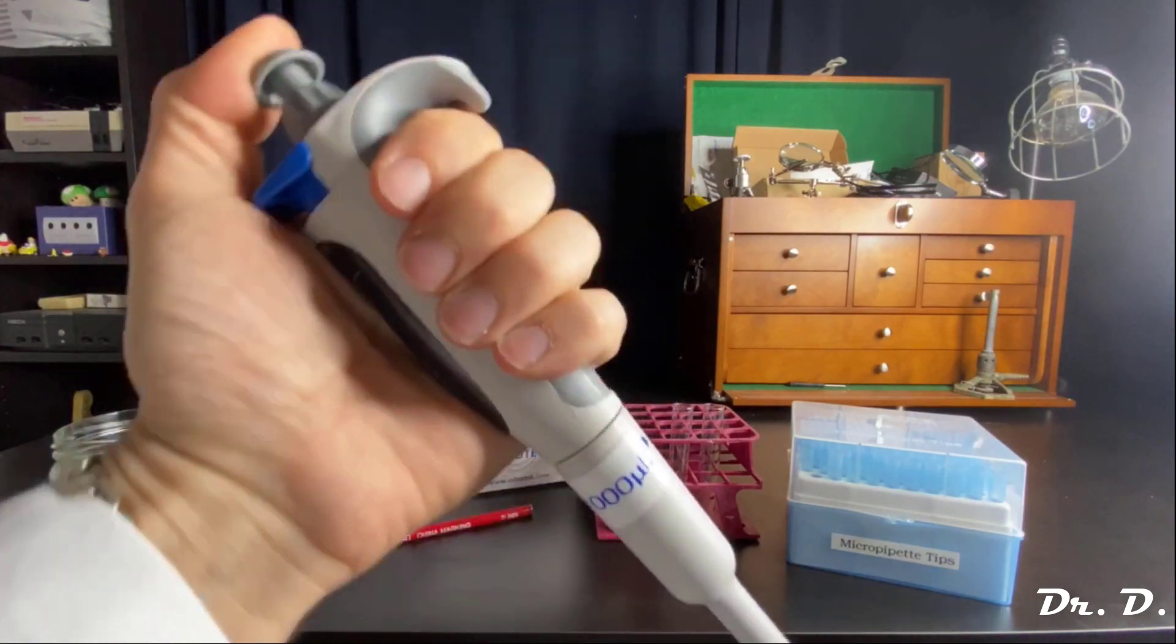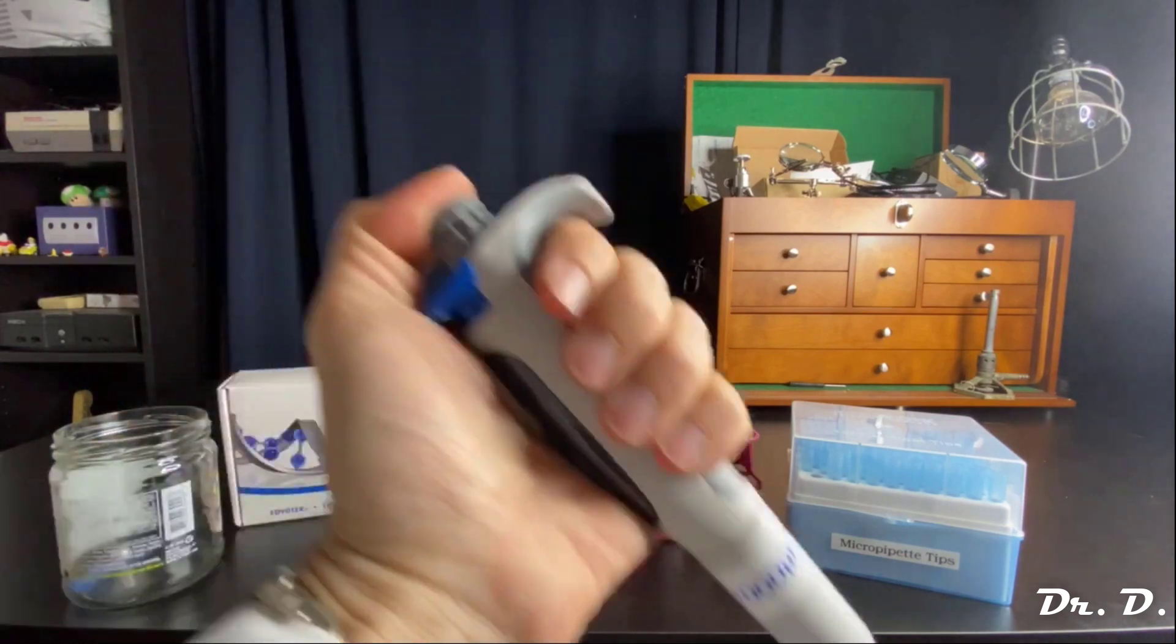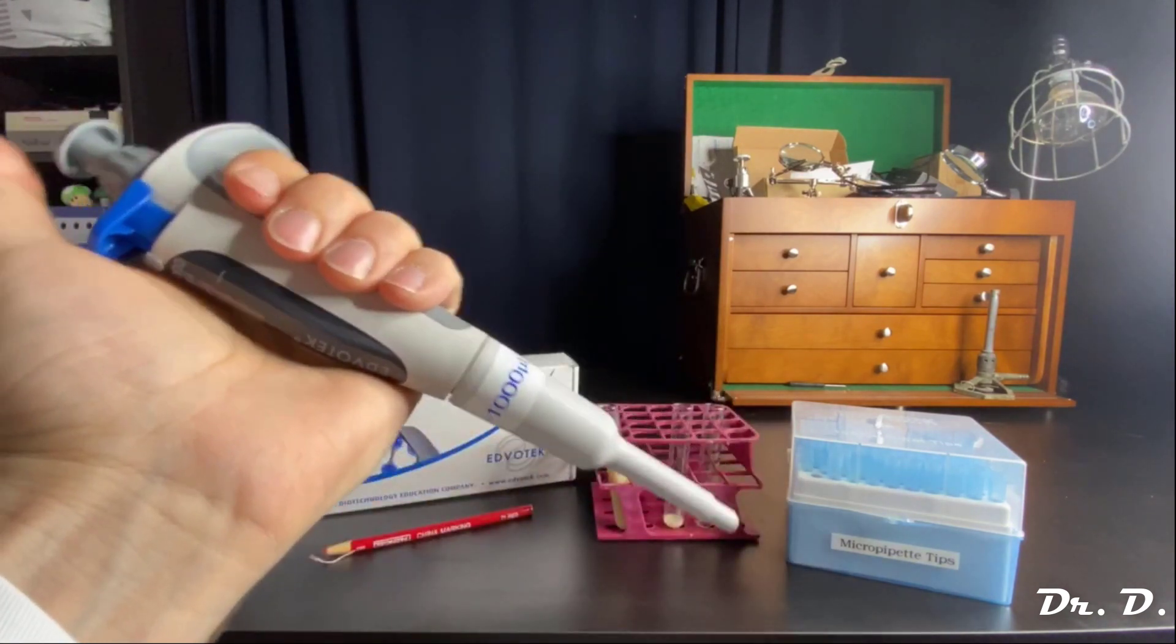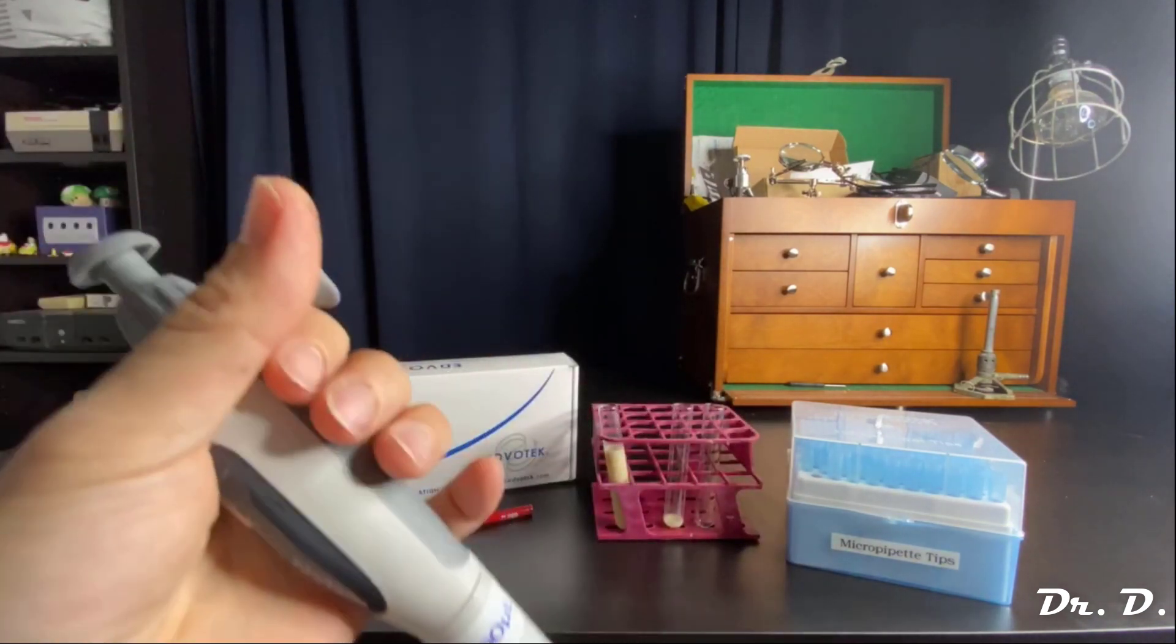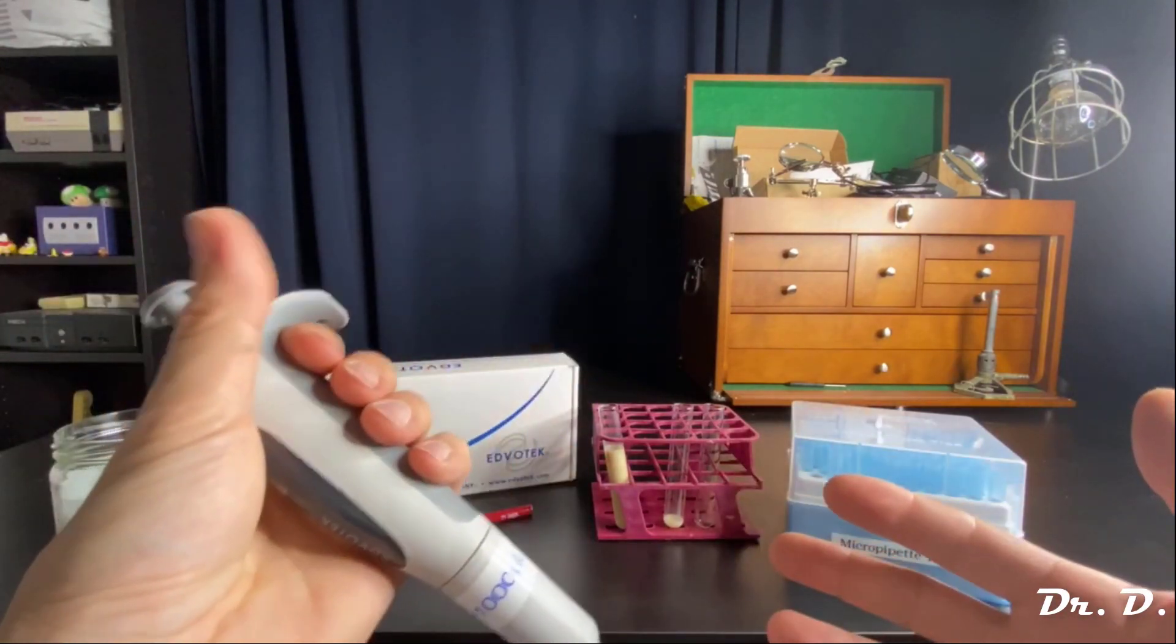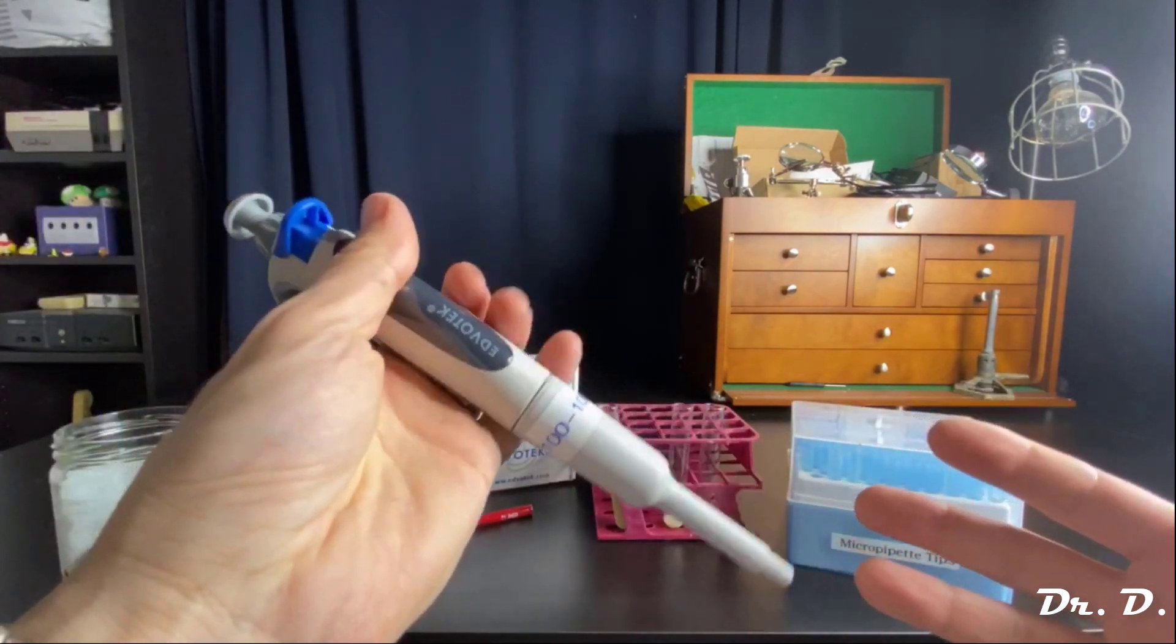And the gray button I told you was the plunger. Remember, first stop for sucking up. Second stop for aliquoting. And so you can just play with it from there. That's pretty much all there is to it. There's really no mystery to this Pipetman.